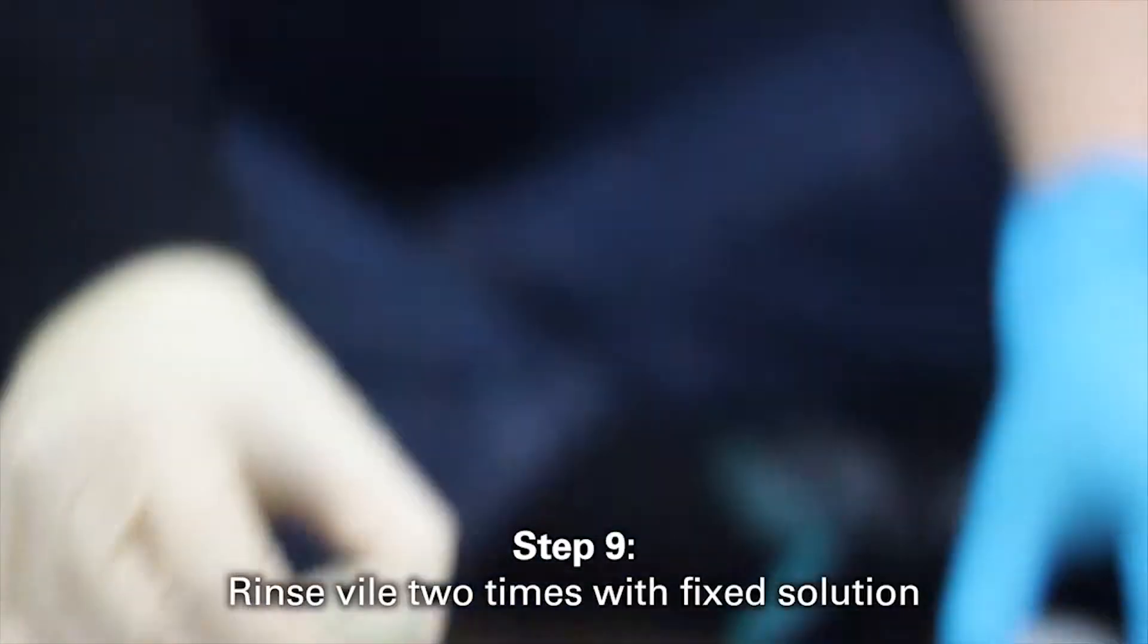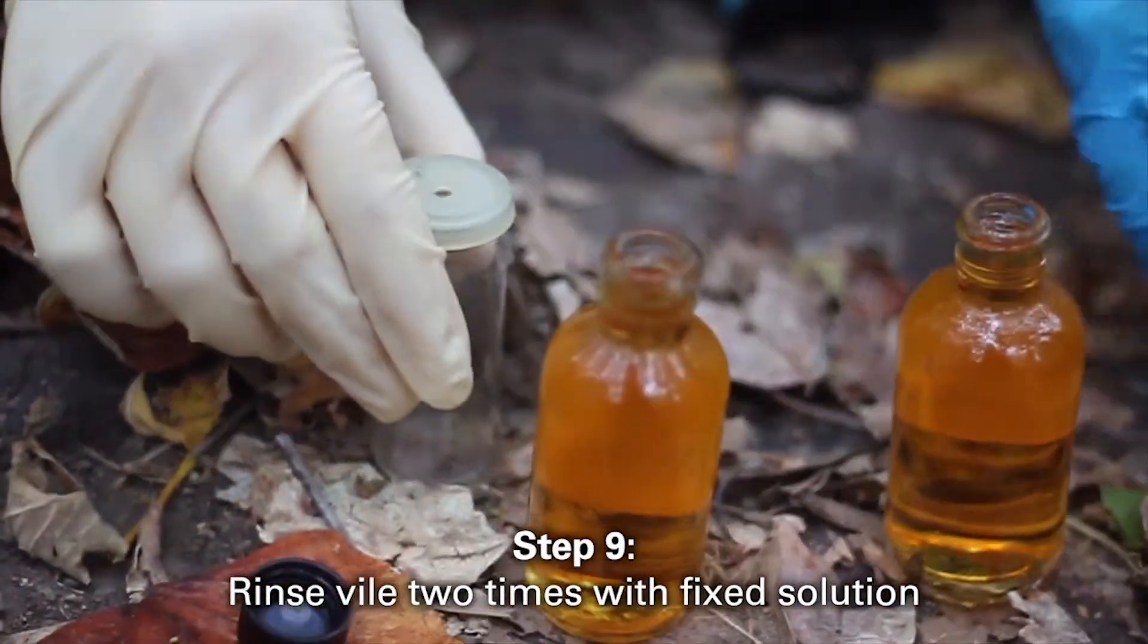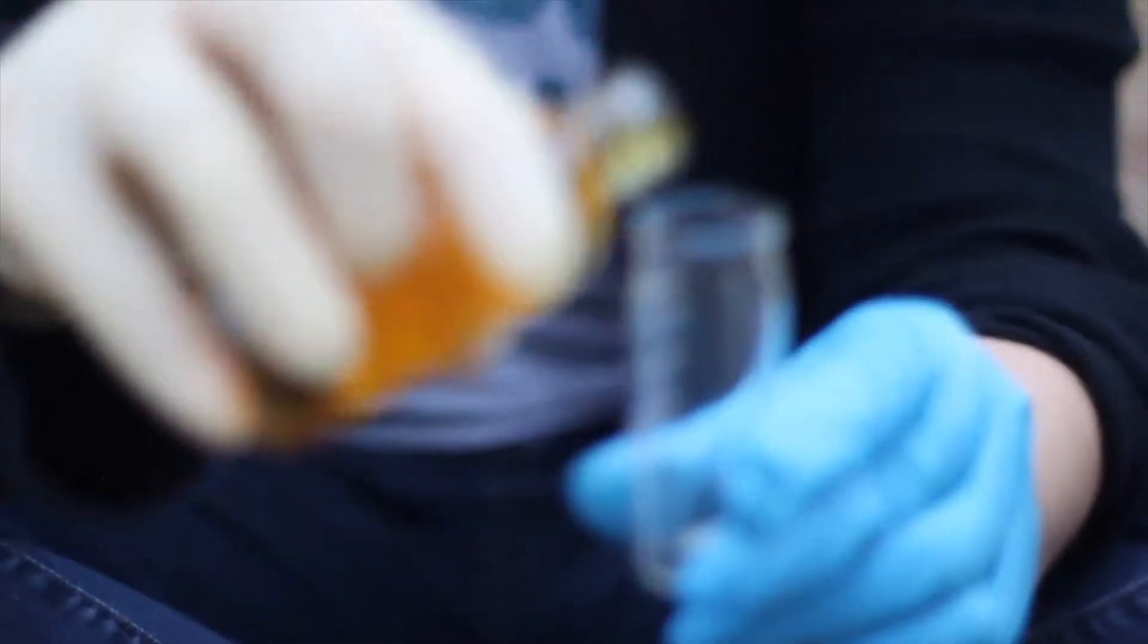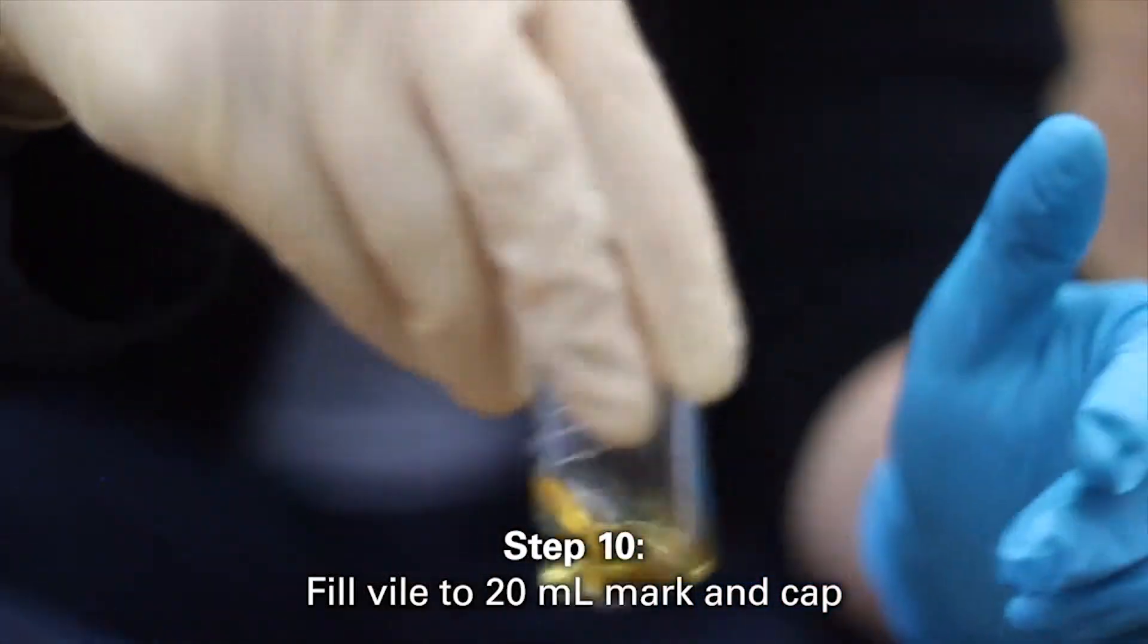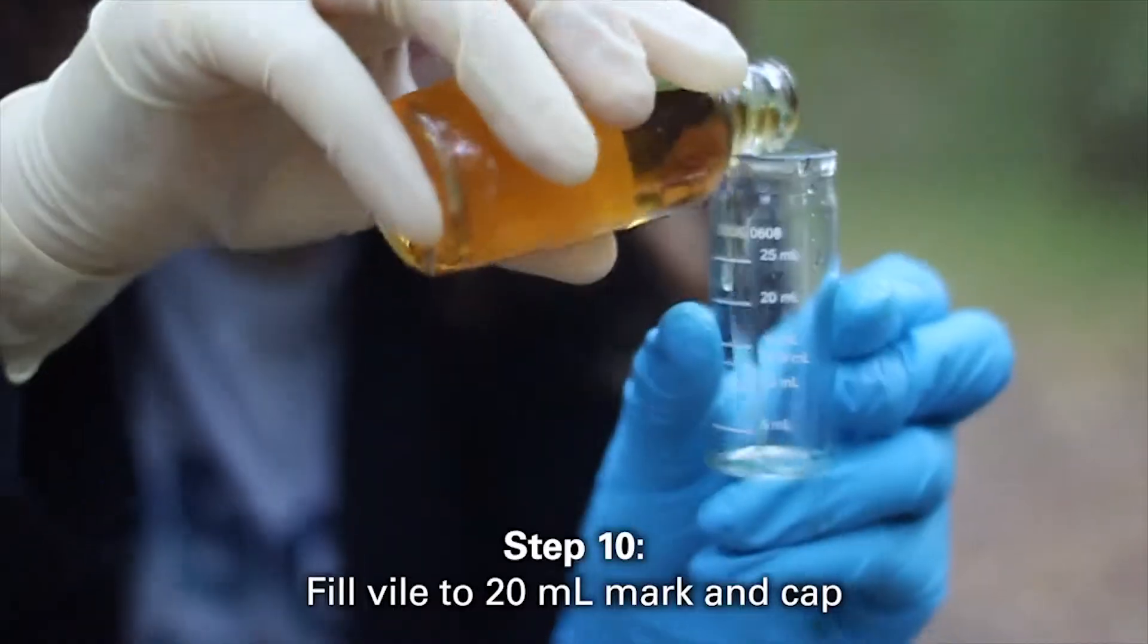You will now take your cylindrical titrator vial and rinse it 2 times with your fixed solution. Remember to have 1 vial constant to each sample. Try not to cross-contaminate. After you have rinsed your vial 2 times, fill each vial up to the 20ml mark and cap them.